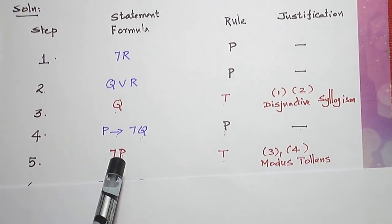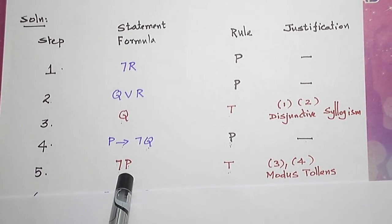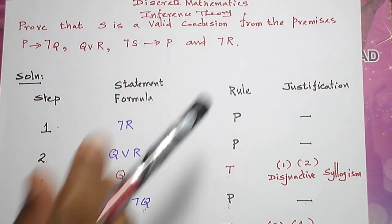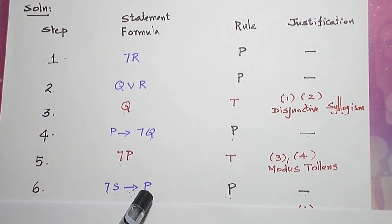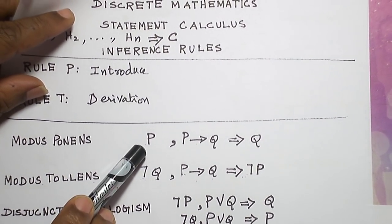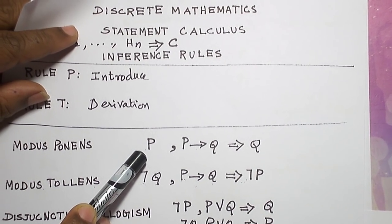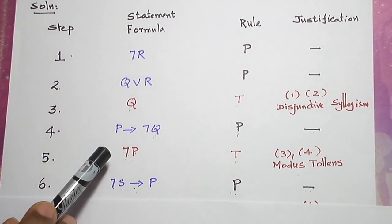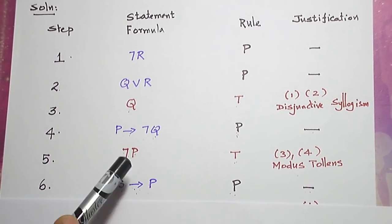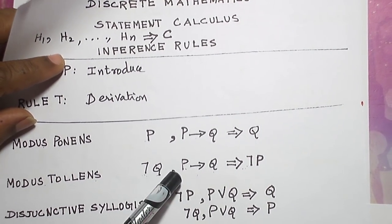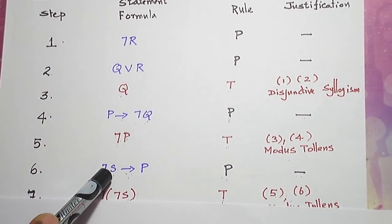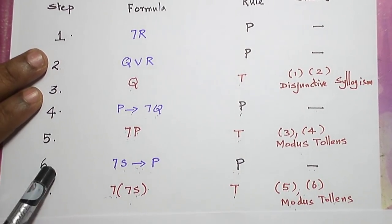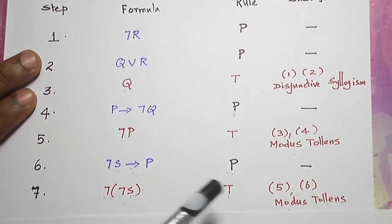Now I have derived negation P, so let me introduce a premise that involves P: negation S conditional P. P is the right-hand side, and negation P is available separately, so I use modus tollens. The conclusion is negation of the left-hand side, that is negation of negation S. This formula is derived from steps 5 and 6 by rule T using modus tollens.